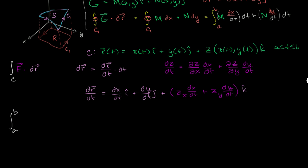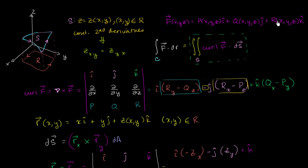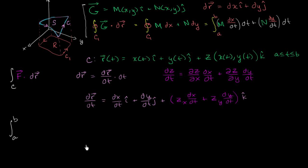F dot dr—remember F's components were just the functions P, Q, and R, each of which were functions of x, y, and z. And z is a function of x and y, so we'll have to think about all of that. When we take the dot product, we just take the corresponding components and multiply them.